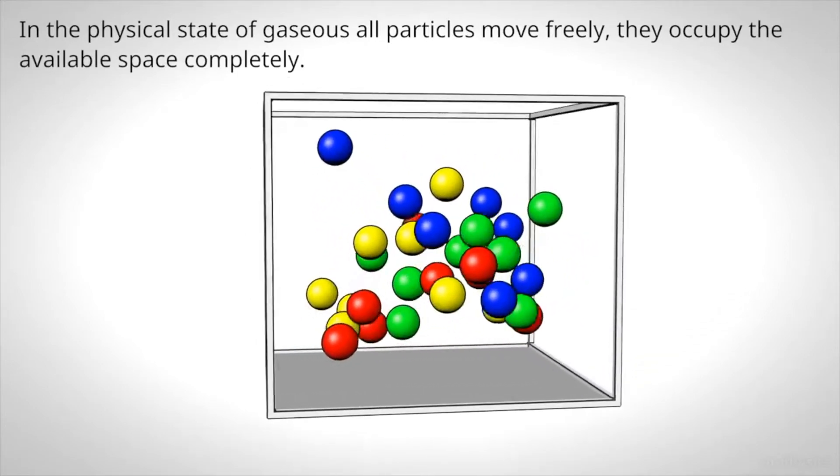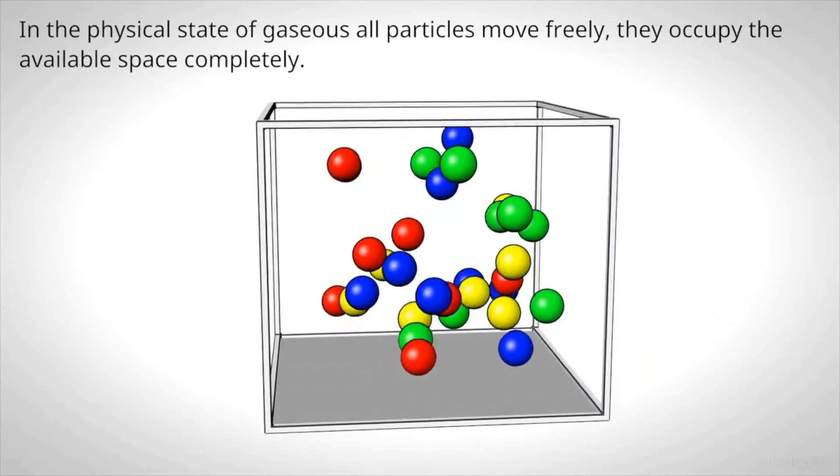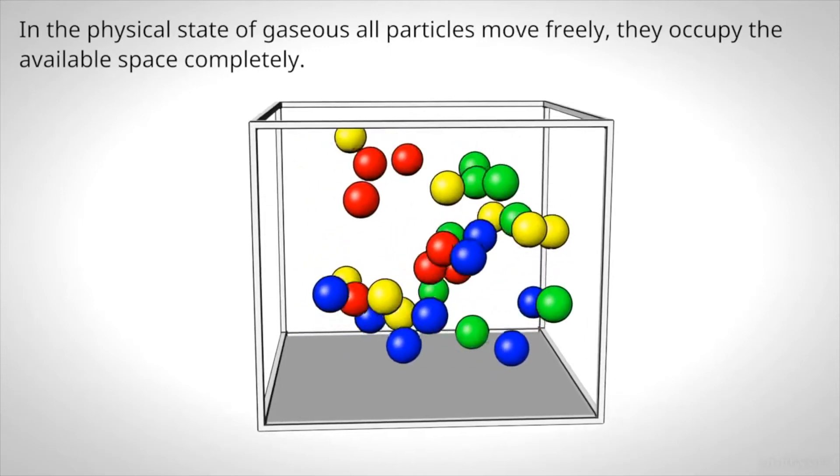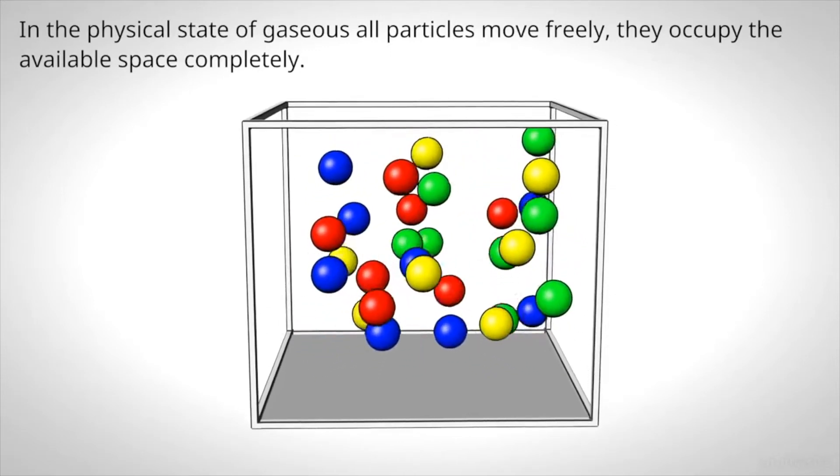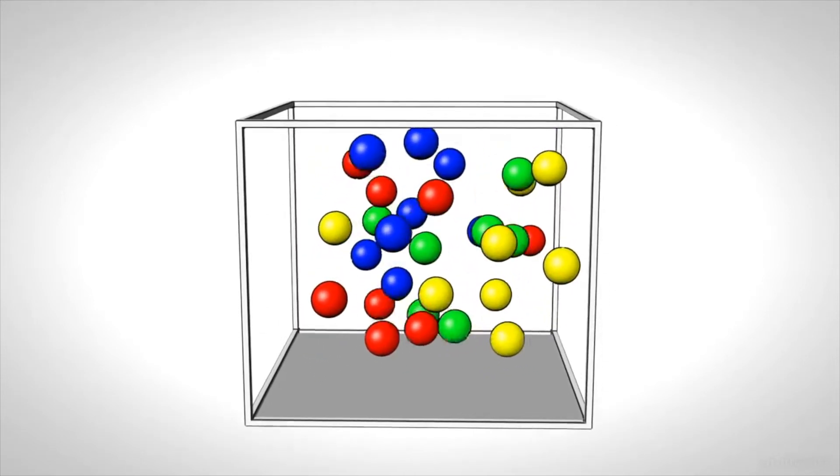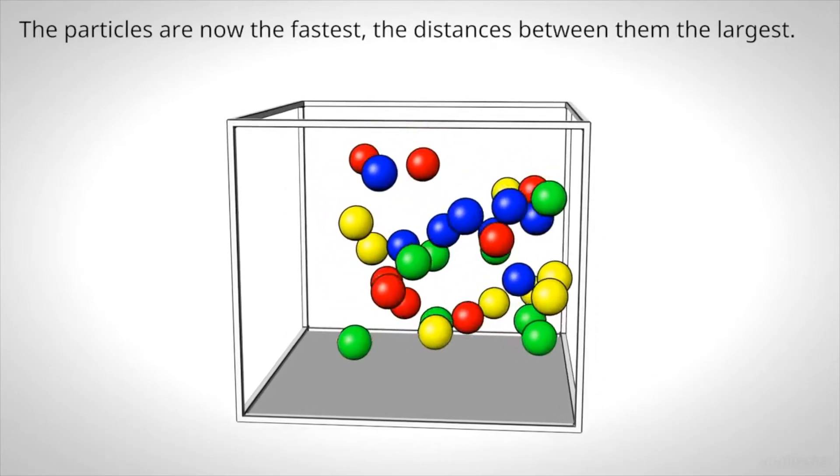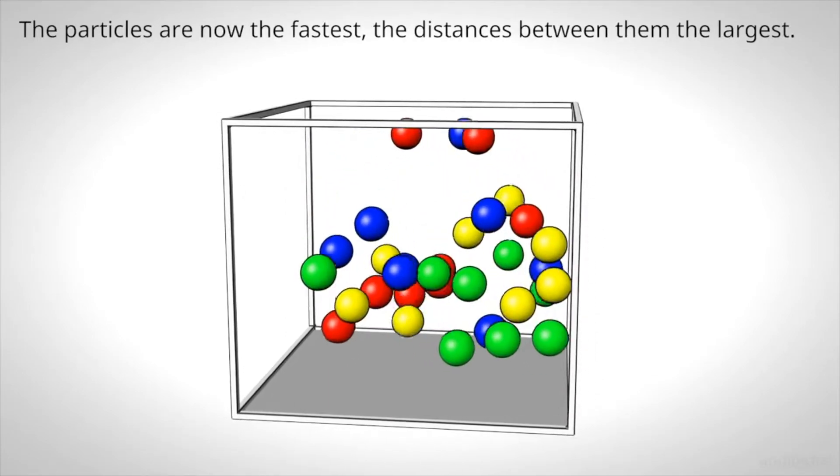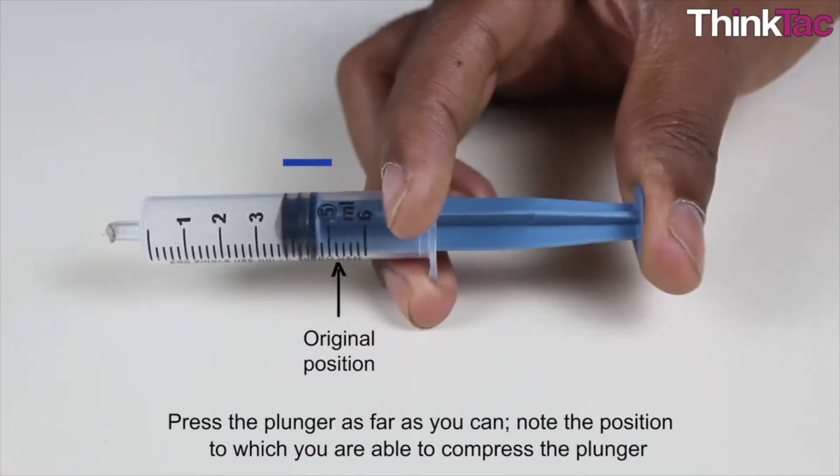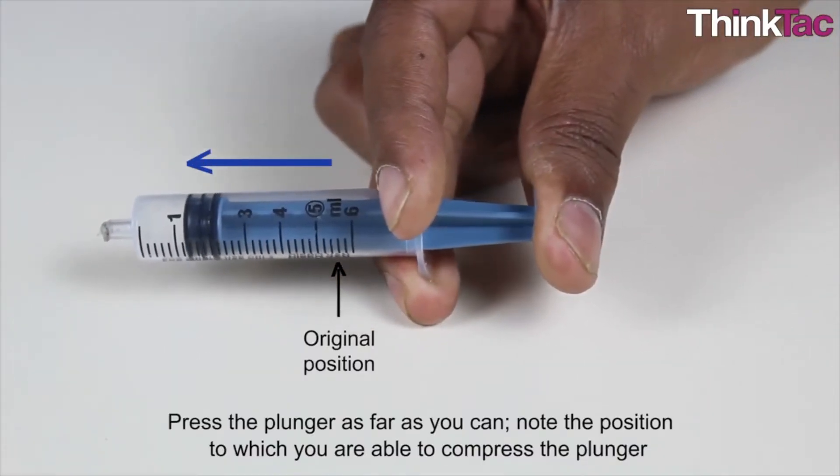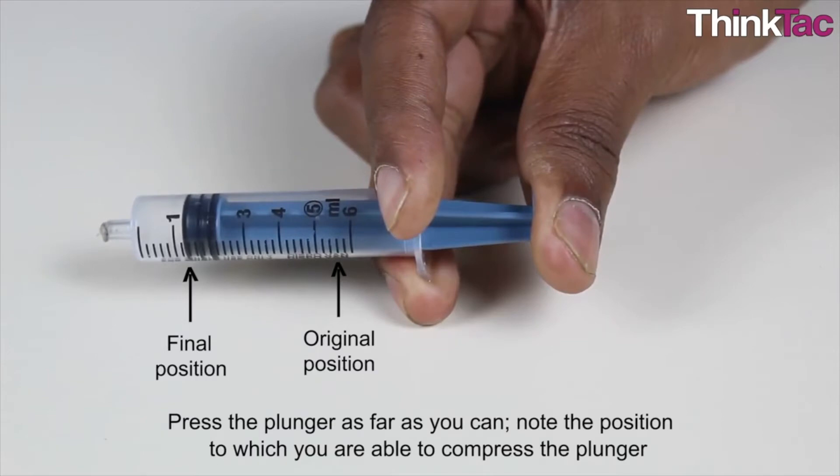Lastly, in gaseous state, particles are very far apart and they are moving at high speeds. There's a lot of kinetic energy, and the forces of attraction between atoms or molecules are very weak. They travel about independently and move rapidly in any direction. Therefore it has no fixed shape and it does not have a fixed volume as well.